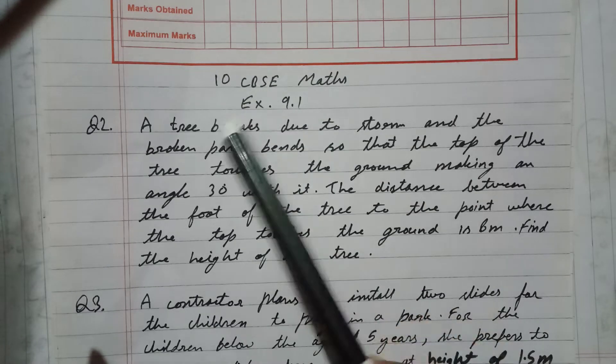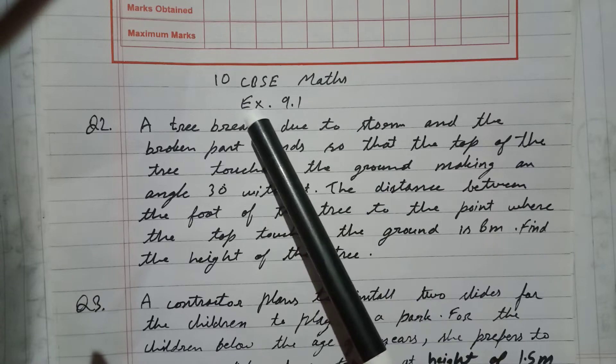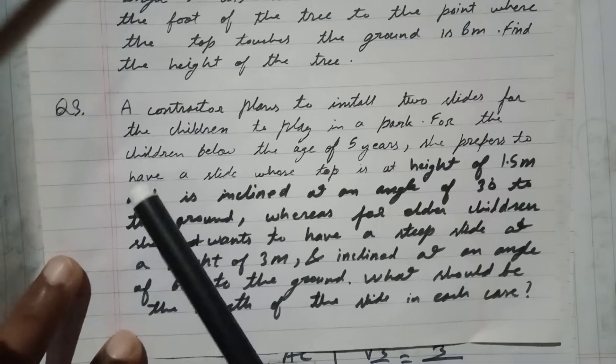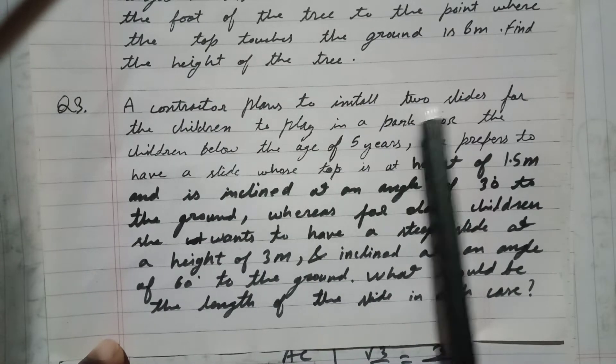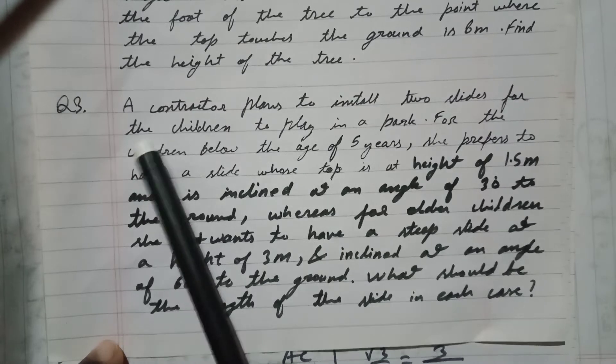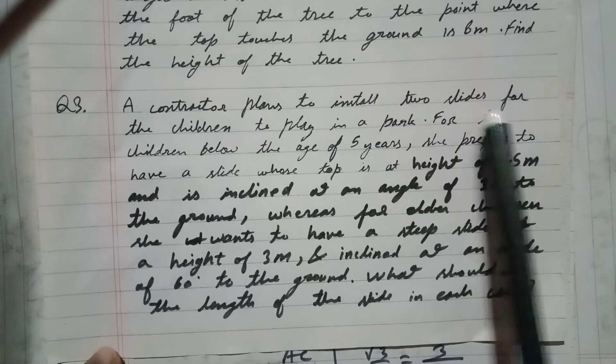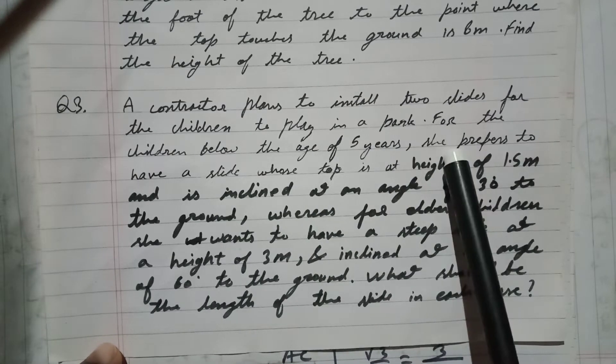Hi, I have a question from 10th CBSE maths exercise 9.1, question number 3. A contractor plans to install two slides for the children to play in a park. For children below the age of 5 years, she prepared to have a slide whose top is at a height of 1.5 meters.